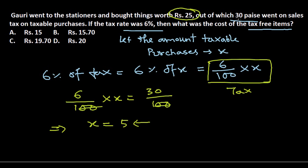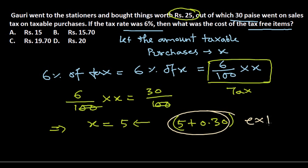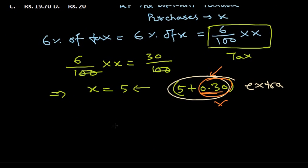Remember, out of the total, 0.30 rupees went on sales tax. The taxable purchase was rupees 5. So the total amount spent on taxable goods including tax is 5 plus 0.30 rupees. Most students mistakenly just use 5 and forget to add the 0.30 tax component — that is the key point here.